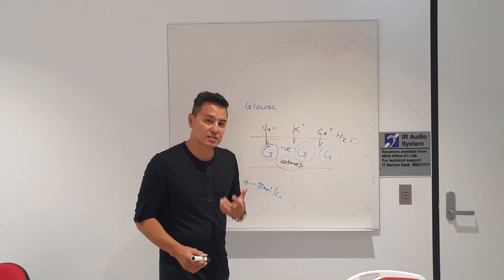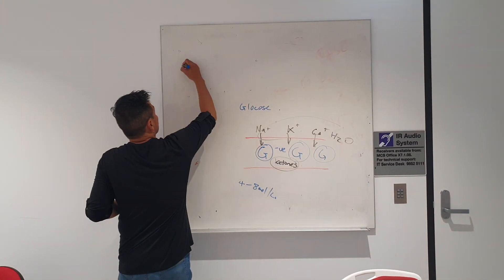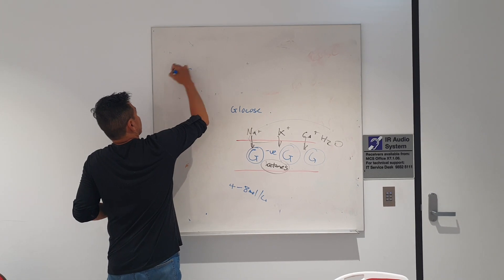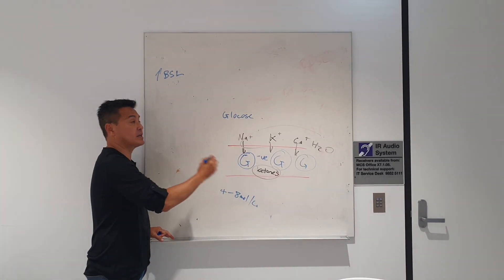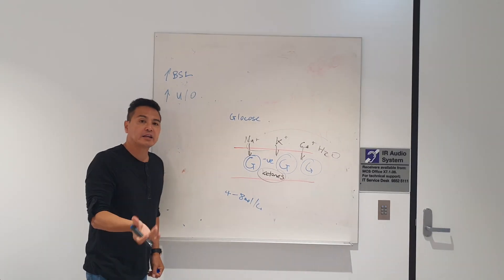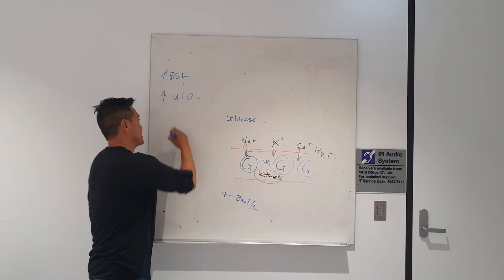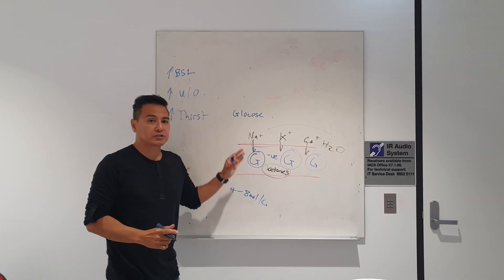Let's think about the signs and symptoms for diabetic ketoacidosis. Of course, you're going to have a BSL that's very high. You're gonna have a patient that's peeing a lot, so you're gonna have very high urine output. And you're gonna have a patient that's very thirsty - high thirst. If this is left untreated...